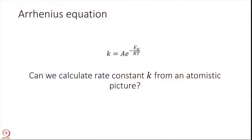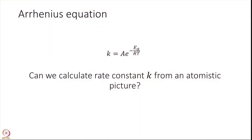Last module we ended with the most fundamental equation in Chemical Kinetics, which is called the Arrhenius equation: K is equal to A times e to the power of minus Ea over RT. We motivated this equation via the Van't Hoff analysis and ended with Arrhenius's physical interpretation of this equation. What we are going to focus on throughout this course is how do we calculate this K — if a new reaction is proposed, the experimentalist wants to know what will be the rate constant, is it feasible or not, and what theories can we use to calculate it.